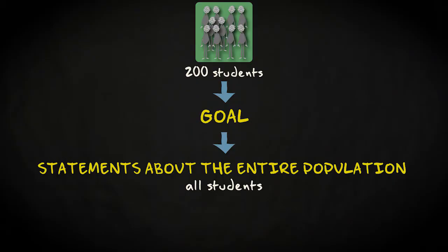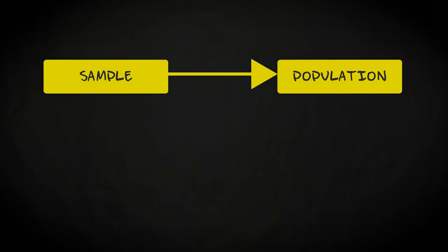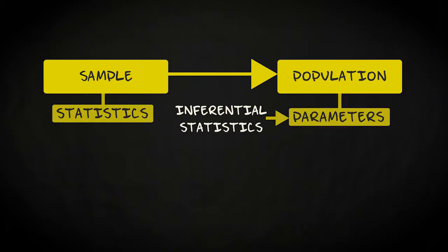If we are employing the data obtained from a sample to draw inferences about a population, we are using methods of inferential statistics. We use the computed statistics to draw conclusions about the corresponding population parameters.